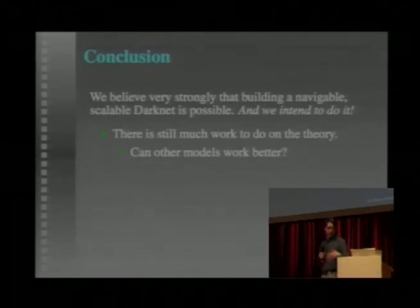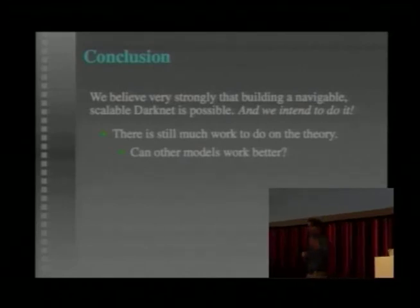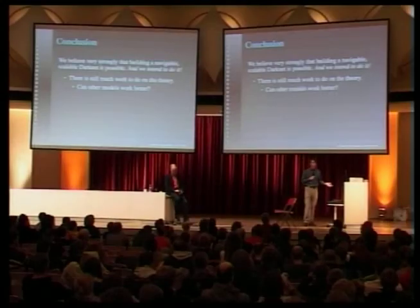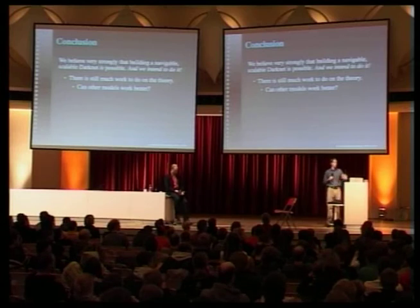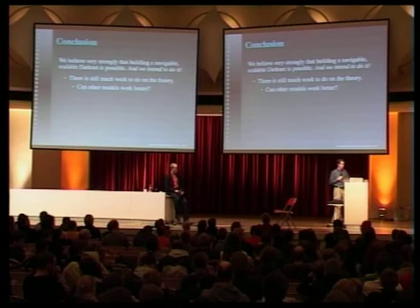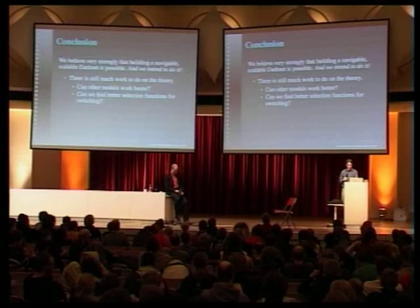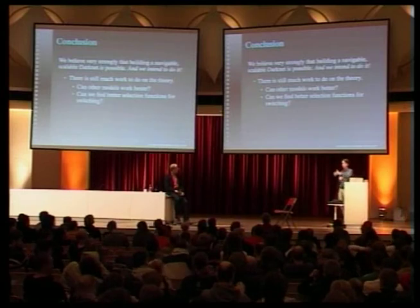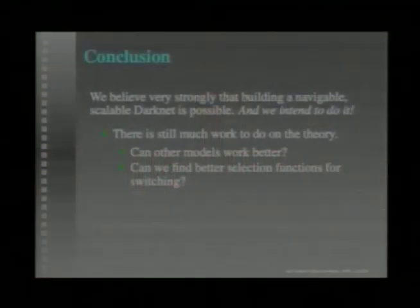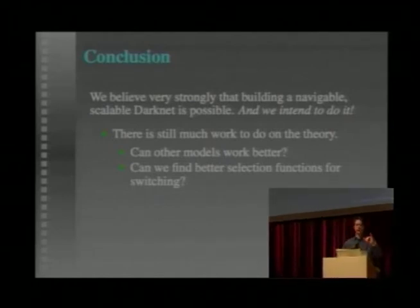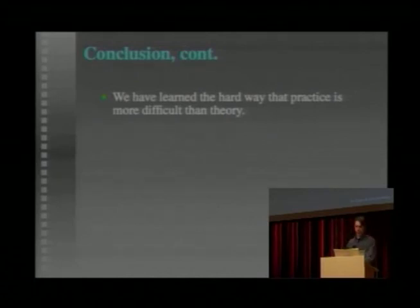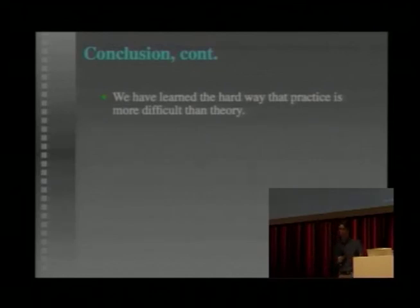Going back to the theory, there is still work to do. The algorithm we've described, we know it works in simulation. Evidence suggests it works on small world networks with our ORCID tests, but we don't know that it's the best possible algorithm. There may be much faster, more efficient, and more robust ways to do this, and that is an ongoing topic of research. Can we find better ways to choose peers to switch? Right now, when we're deciding whether two peers should switch, they're just chosen at random. Maybe there's a better way. And of course, we need to test it on more data. Practice is always more difficult than theory — this is something we've learned very much the hard way over the past five years.